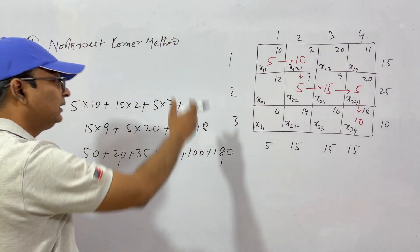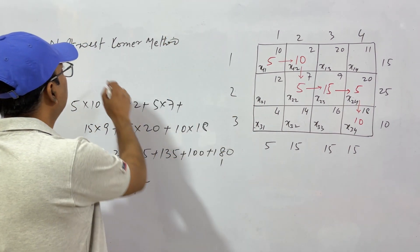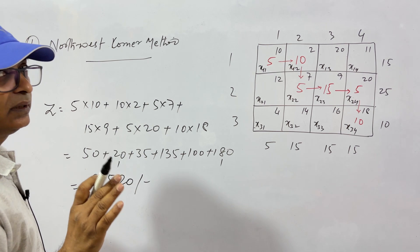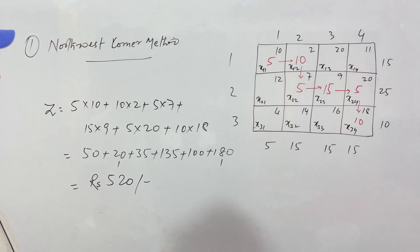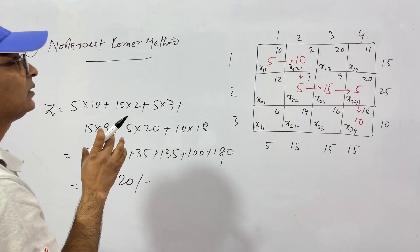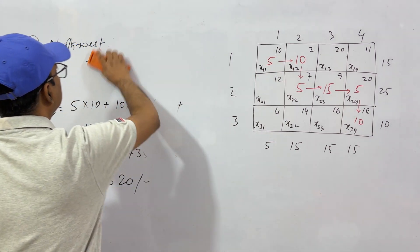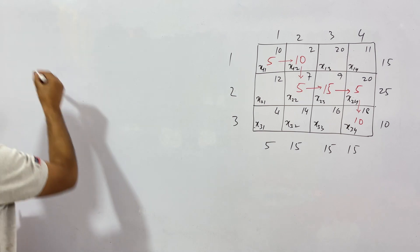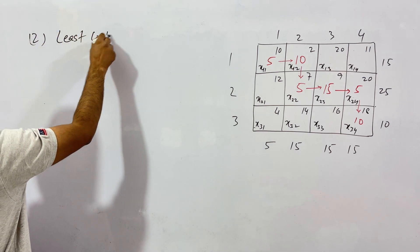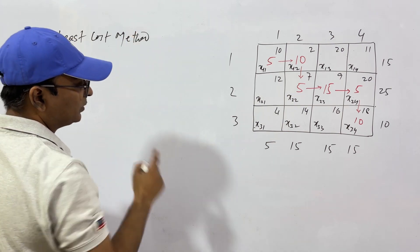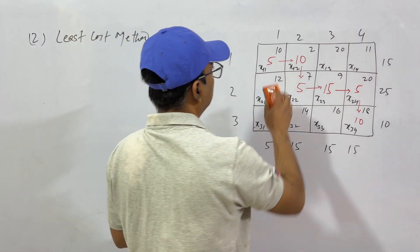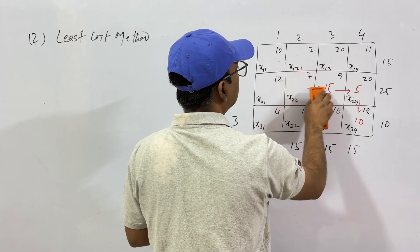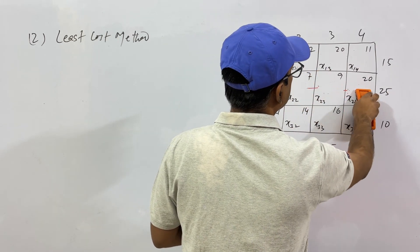This is the cost of transportation from these 3 supply units to 4 consumption units using the North-West corner method. This does not give a very good result, but it is the simplest method. Now let us see the least cost method — how we calculate the transportation cost using the second method.